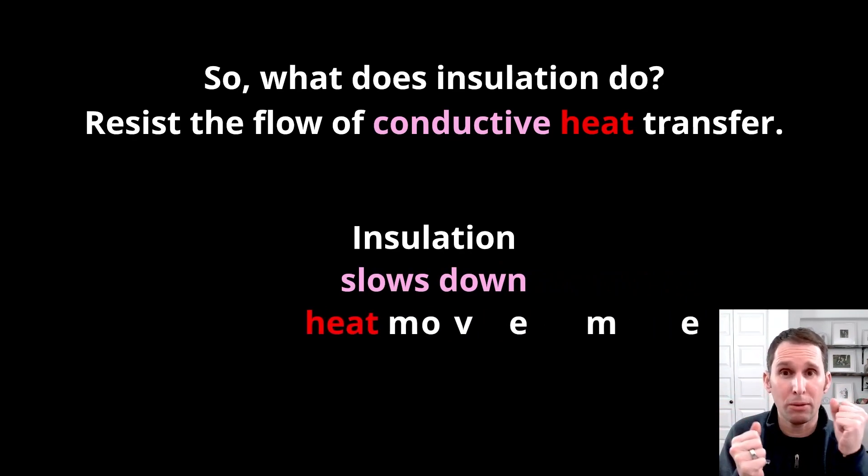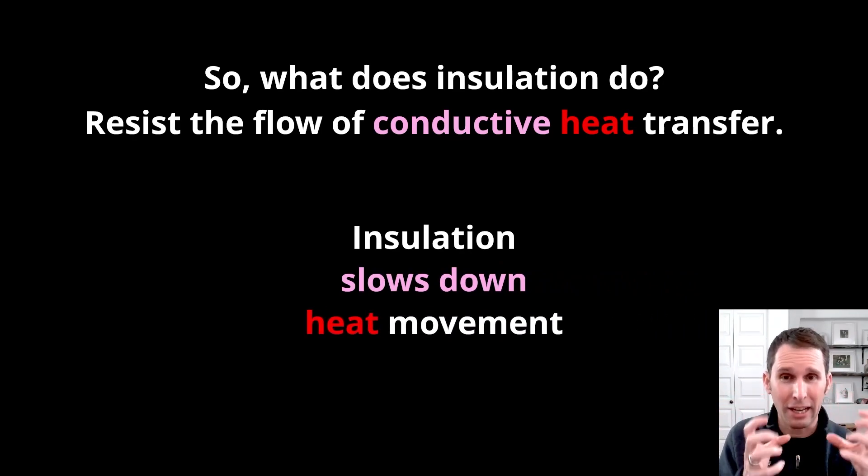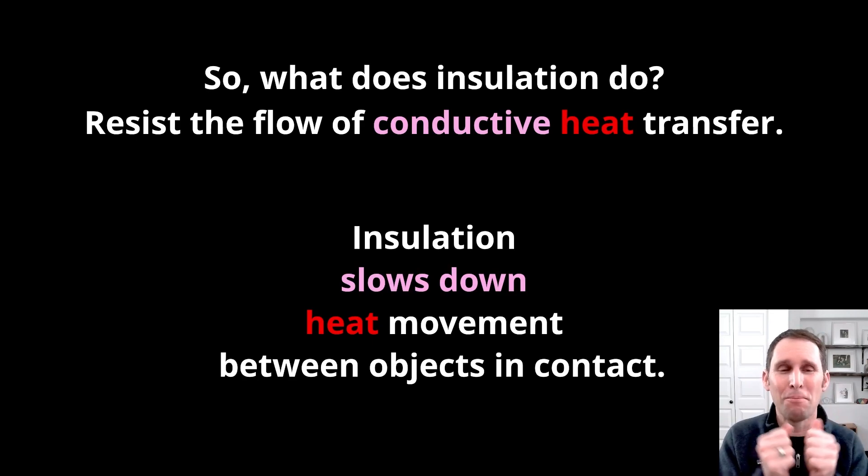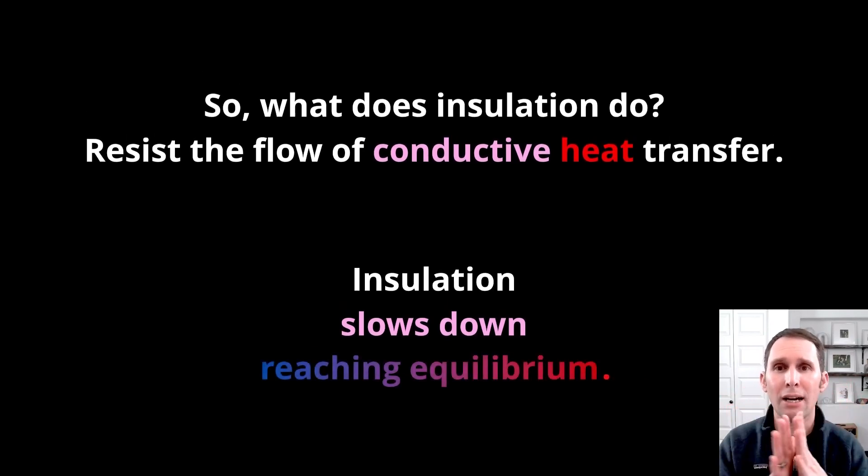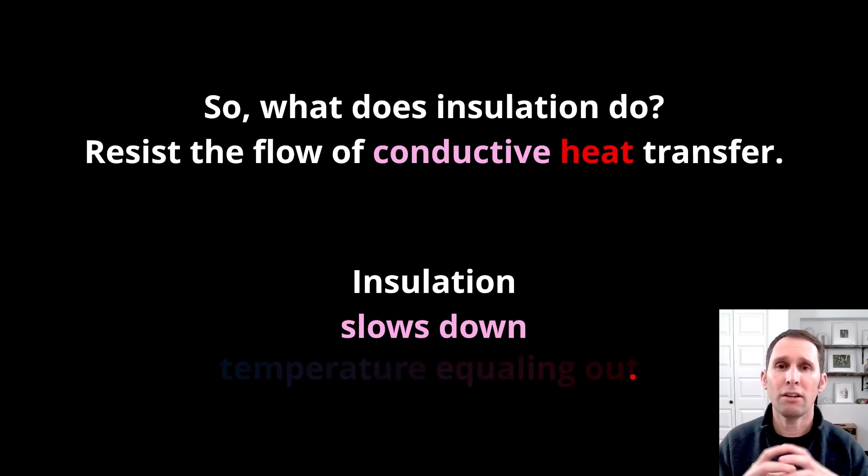An object, in this case, could be air, which is a gas. It's a very light object. But fundamentally, you have two spaces. Let's say an area is 90 degrees and another area is 70 degrees. They're going to want to equal out in terms of temperature, everything else being equal. Insulation slows down things reaching equilibrium, or in another way said, temperature equaling out.